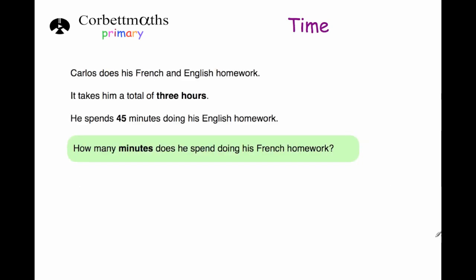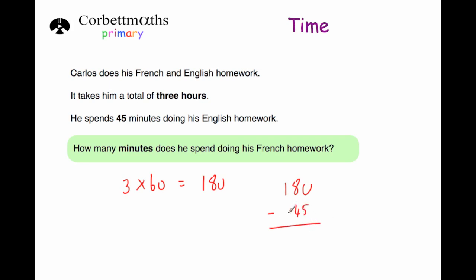Our next question says Carlos does his French and English homework. It takes him a total of three hours. He spends 45 minutes doing his English homework. How many minutes does he spend doing his French homework? In one hour there are 60 minutes, so we need to do three times 60, and three times 60 is 180 minutes. We take the 45 minutes away from the 180 minutes. 10 takeaway 5 is 5, 7 takeaway 4 is 3, and 1 takeaway 0 is 1. So the answer is 135 minutes.